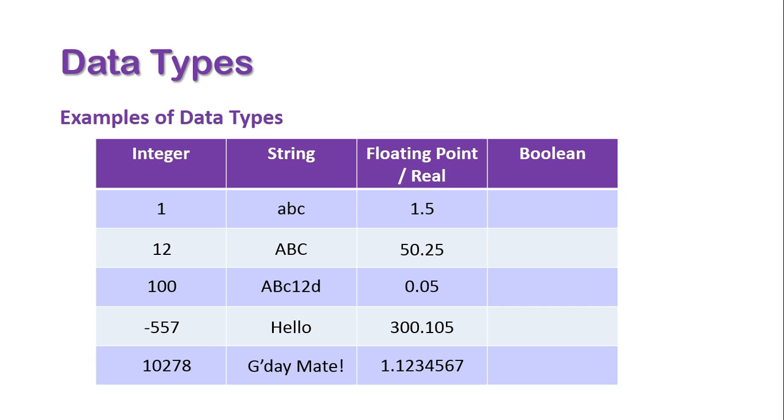And finally is our boolean, where the data is in one of two states: true or false, on or off, yes or no, or that could just be Y and N, or M and F for like male or female kind of data type.